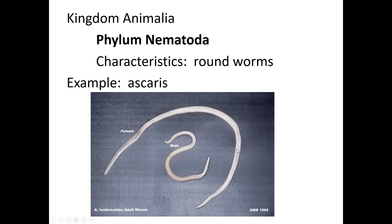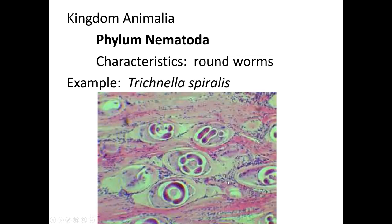Next up, roundworms — phylum Nematoda. Ascaris is a human parasite that lives in the digestive system; the female can be about a foot long. Dogs can also get nematodes and need deworming. Trichinella spiralis is another parasite but this one goes to the muscle, not the digestive system — this is from eating undercooked pork, making it incredibly painful to move affected muscles. Always cook pork to the appropriate temperature to kill any worms. If you're a hunter eating feral hogs, you could get Trichinella from them.